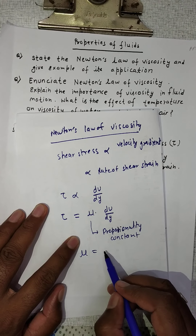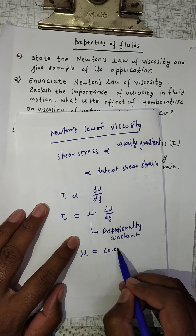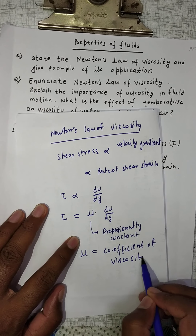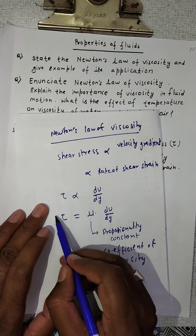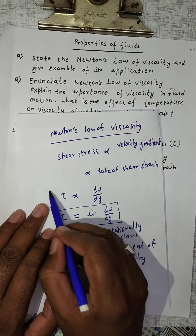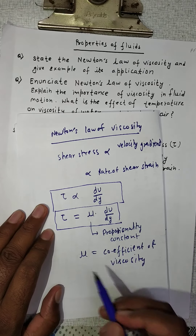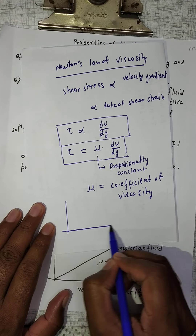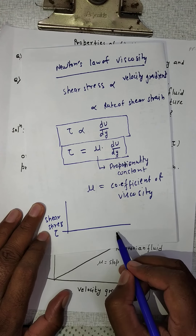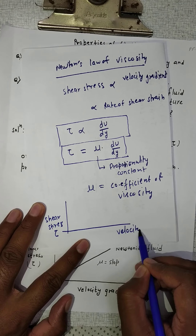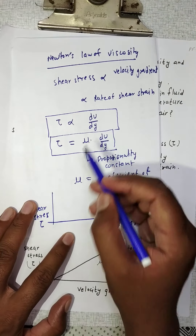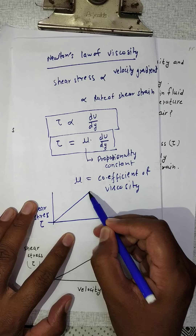Here mu is the proportionality constant, known as the coefficient of viscosity. The relation between shear stress and velocity gradient is directly proportional. If you draw the curve with shear stress tau on one axis and velocity gradient on the other, the slope comes as a straight line.